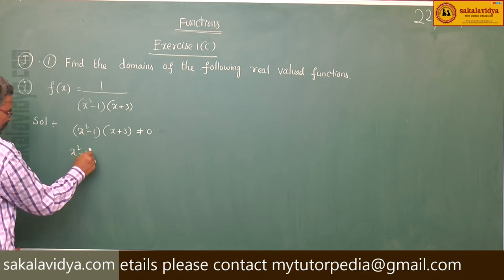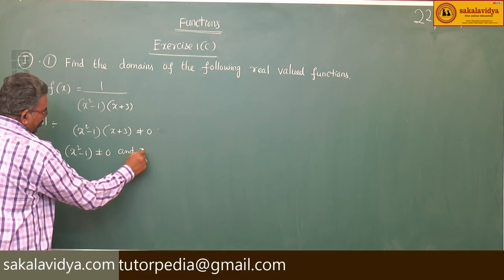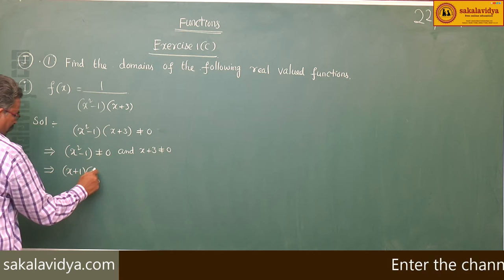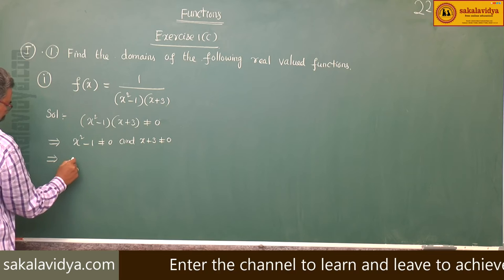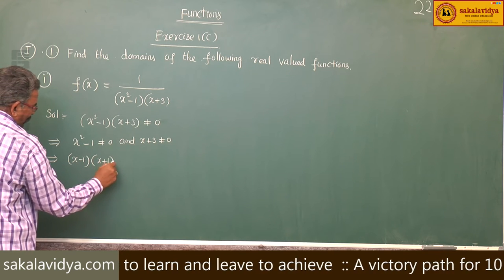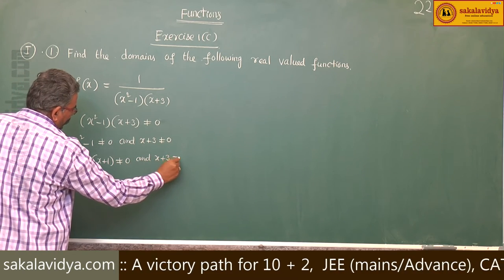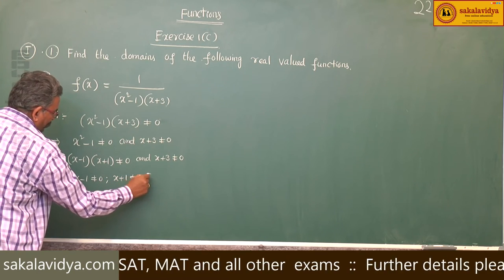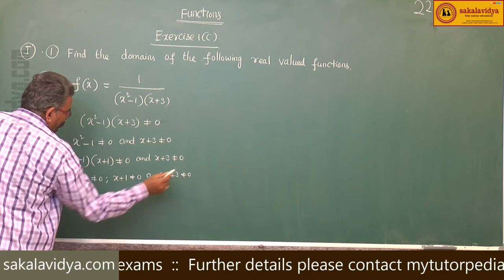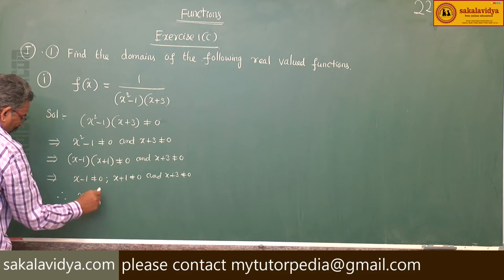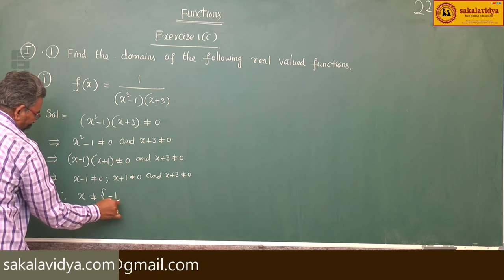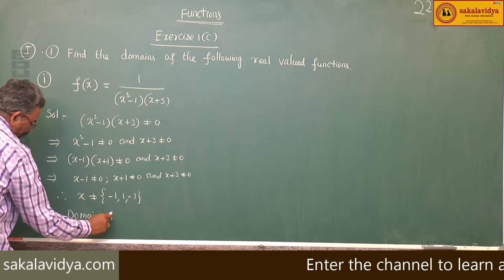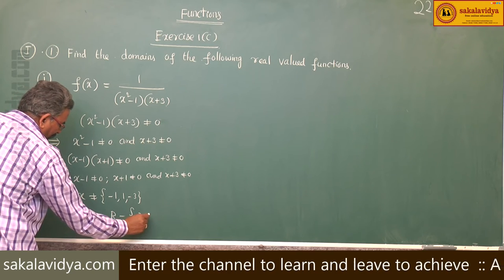So we get x squared minus 1 does not equal to 0 and x plus 3 does not equal to 0. Factoring: x plus 1 into x minus 1 does not equal to 0, so x minus 1 does not equal to 0, x plus 1 does not equal to 0, and x plus 3 does not equal to 0. Therefore, x does not equal to 1, minus 1, or minus 3. So domain is equal to R minus the set {minus 3, minus 1, 1}.